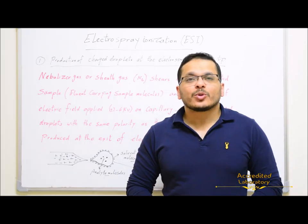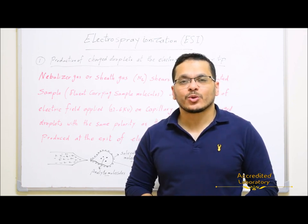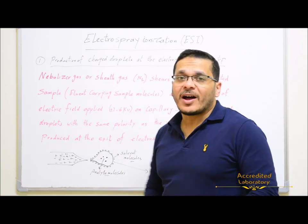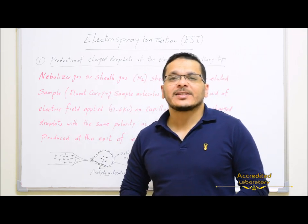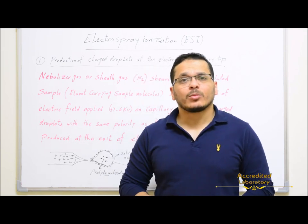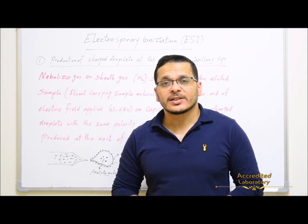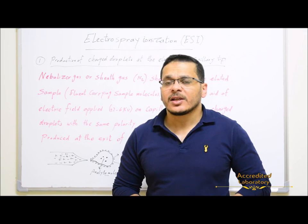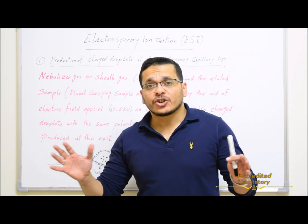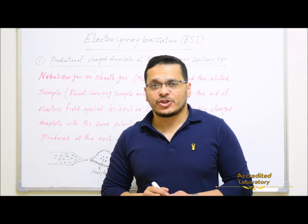To explain the process in detail, there are three steps taking place inside the electrospray ion source to produce ions. The first step is production of highly charged droplets at the exit of the electrospray capillary, in which the eluent-carrying sample molecules are nebulized by nitrogen gas and then ionized by the high voltage applied on the capillary. The charged droplets are produced with the same polarity as the voltage applied.